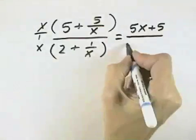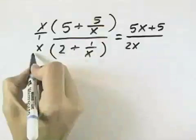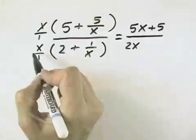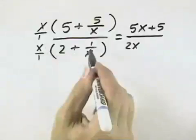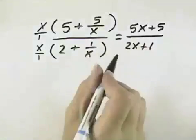In the denominator, I'll multiply the 2 times the x, so I have 2x, and then when I multiply the x times the 1 over x, I can look at it as x over 1, and when I multiply that out, the x's cancel, just leaving the 1, so I'm left with 2x plus 1.